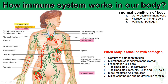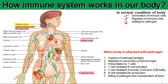In the secondary lymphoid organ these cells reside for a couple of days and wait to see whether any antigen or foreign pathogen is coming inside the body. If they don't encounter any pathogen, they die. This is the normal phenomenon — cells are generated, migrate from primary to secondary lymphoid organs, wait, and die.